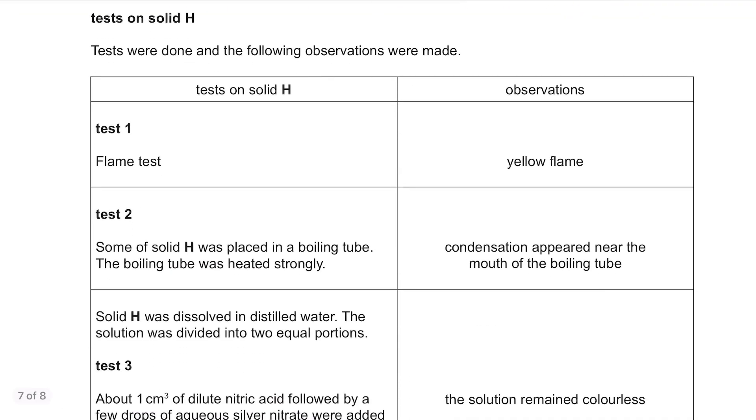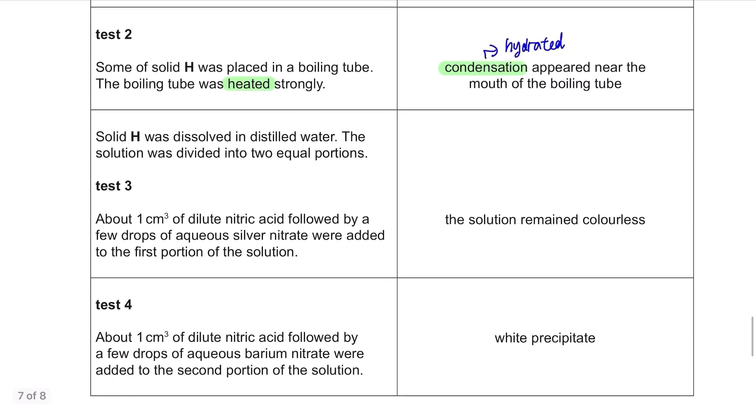Tests on solid H. Tests were done and the following observations were made. In test 1, the flame test showed yellow flame. Yellow flame means that sodium is present. Test 2, some of solid H was placed in a boiling tube. The boiling tube was heated strongly. Condensation appeared near the mouth of the boiling tube. This means the solid is hydrated.